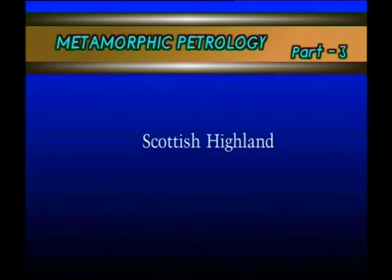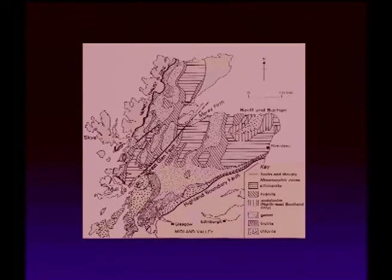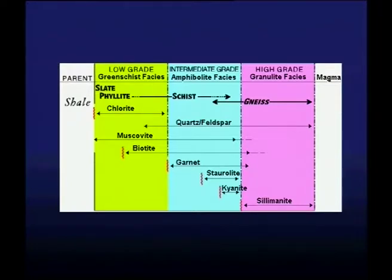On the basis of pressure and temperature concepts, the Barrovian type of metamorphism is normally an intermediate pressure-temperature facies. Tilley also supported the zones described by Barrov in the Scottish Highlands, finding the same results — the Barrovian type of metamorphism. Now let us look at the map of that area on the screen, where we can see the different grades based on index minerals: chlorite zone, biotite zone, almandine garnet zone, staurolite zone, kyanite zone, and sillimanite zone.